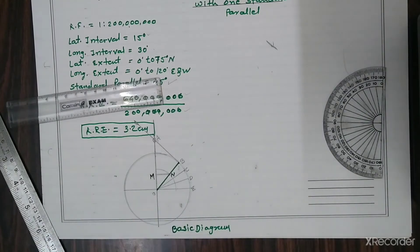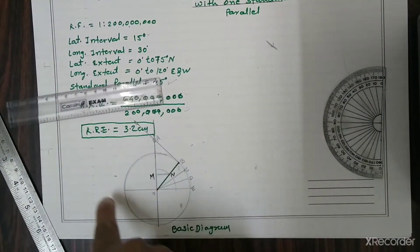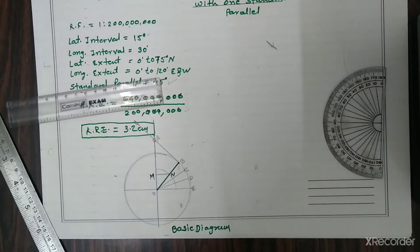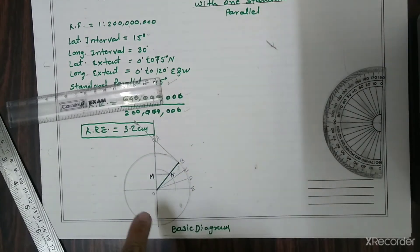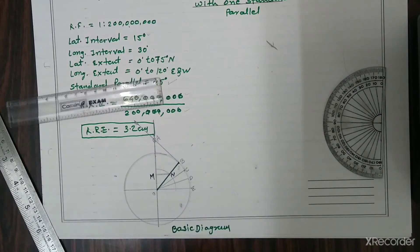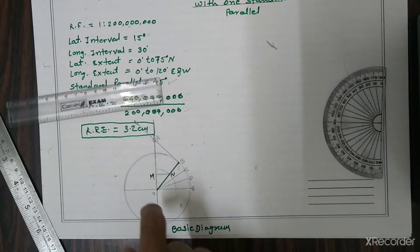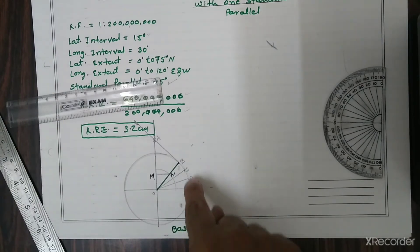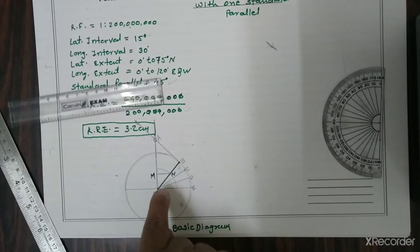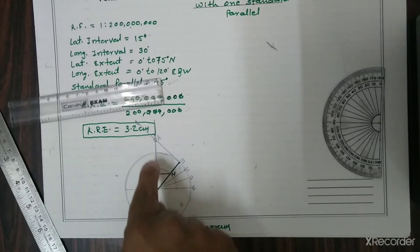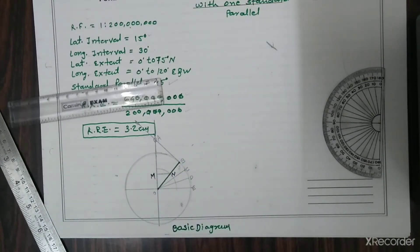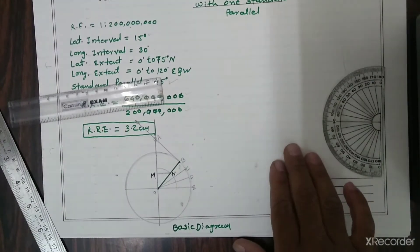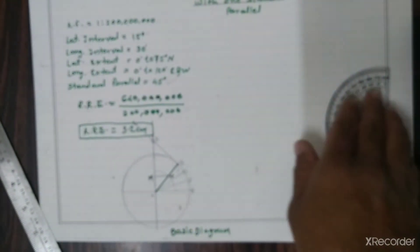To summarize the basic diagram: we drew the circle with 3.2 cm radius, divided it into four parts, marked the standard parallel, the latitudinal and longitudinal intervals, drew an arc using the C-to-E distance (30-degree interval), got one perpendicular line to OA — that is the MN line. Now we move further to construct the main diagram.